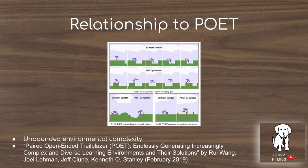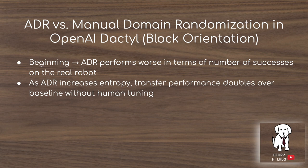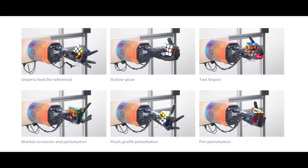The research study compares automatic domain randomization to the manual domain randomization used in the July 2018 block orientation task. In the beginning the ADR algorithm performs worse, but as ADR increases the entropy — as the randomization gets more intense and environments become increasingly different from each other — the transfer performance doubles, and it starts to perform much better than the previous manual domain randomization algorithm.